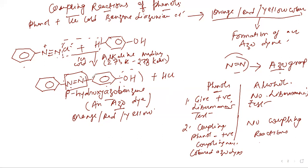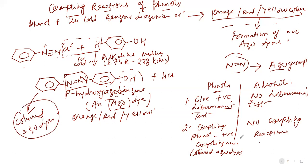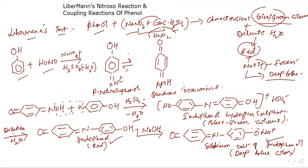Remember the new concepts learned here: azo dyes are named so because they contain the azo group. For the color changes in Liebermann's test: blue-green color is due to indophenol hydrogen sulfate; on dilution it forms indophenol which is red; on treatment with sodium hydroxide it gives sodium salt of indophenol which is deep blue in color.